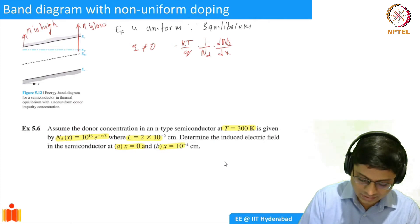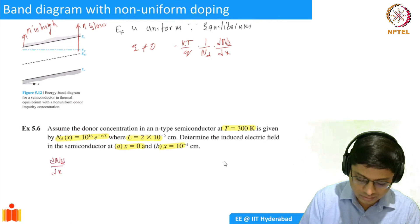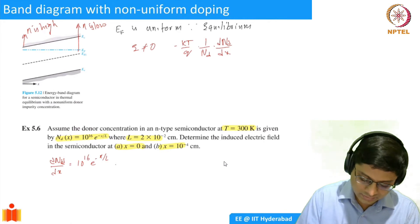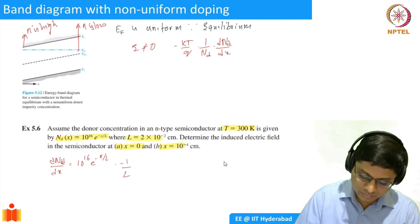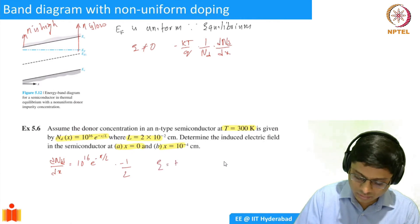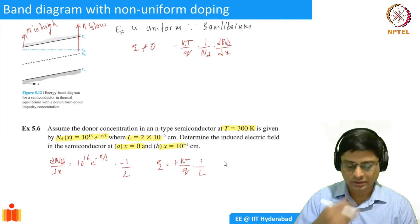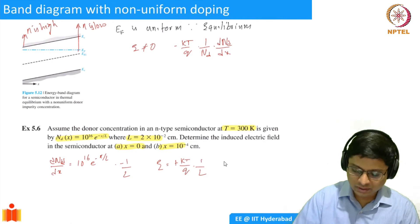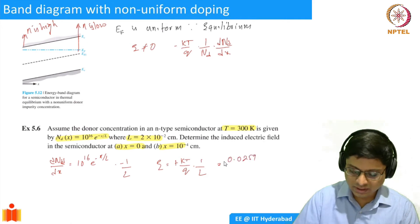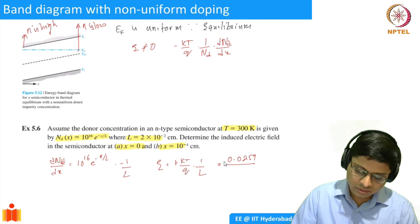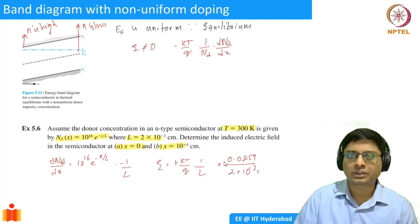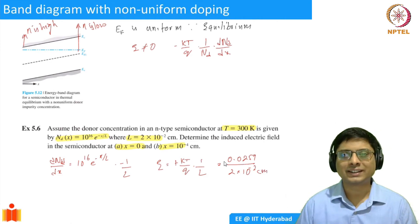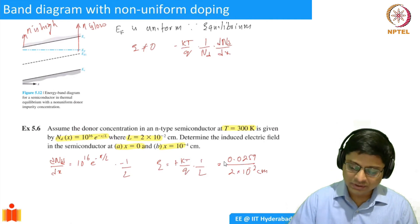We have the expression. So if you calculate dN_D/dx, it's going to be 10¹⁶ times e^(−x/L) times (−1/L). So E becomes plus (kT/q) times (1/N_D) — the N_D terms cancel — leaving 1/L. kT/q is 0.0259 V, divided by L which is 2×10⁻² cm. In semiconductors we use centimeters, not meters.